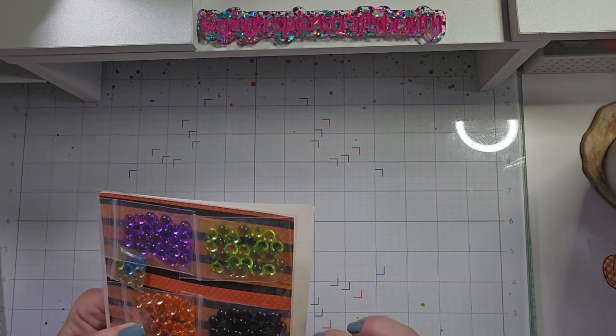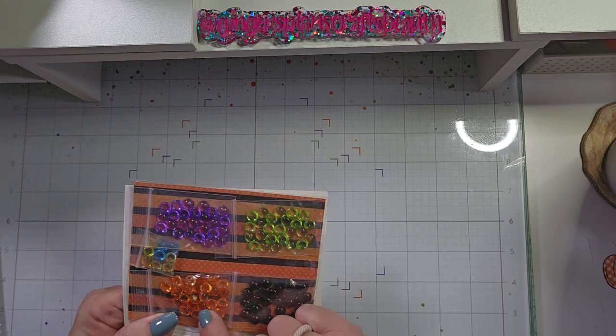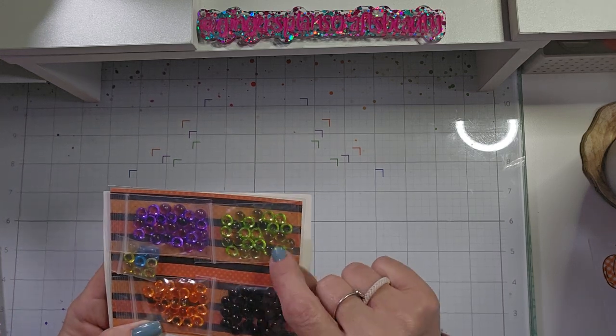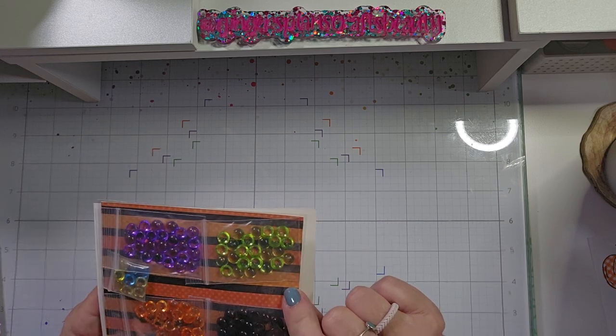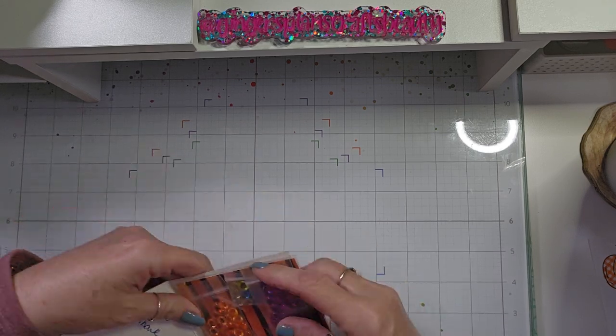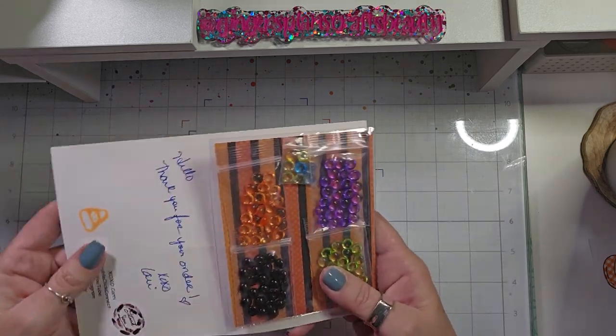So these are really close to being black, but more like a really deep, dark burgundy. We have some orange, the purple, and then the green. And they have just a little bit of glitter in them. Super cute.